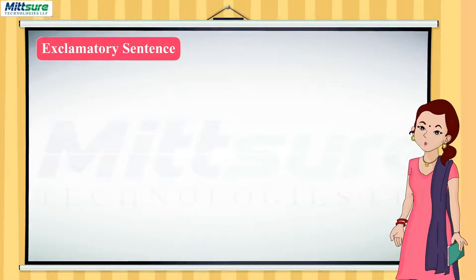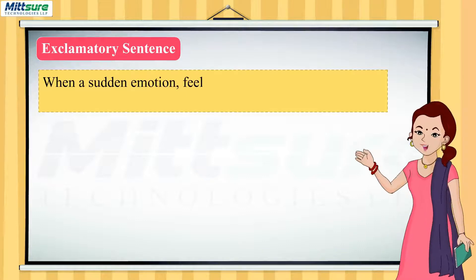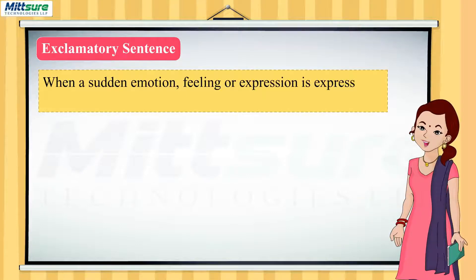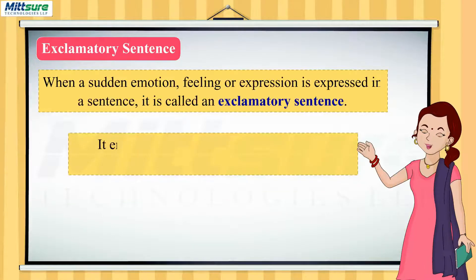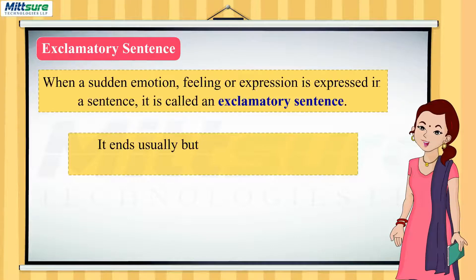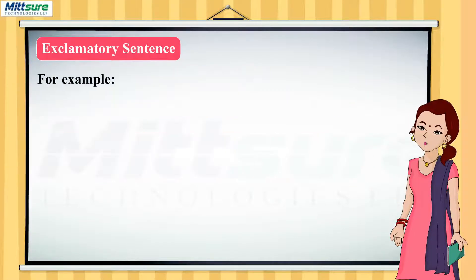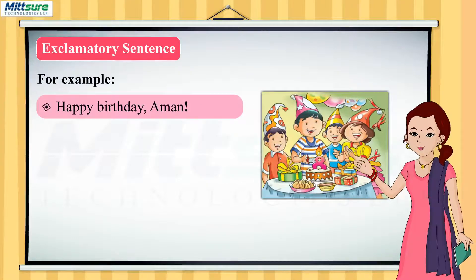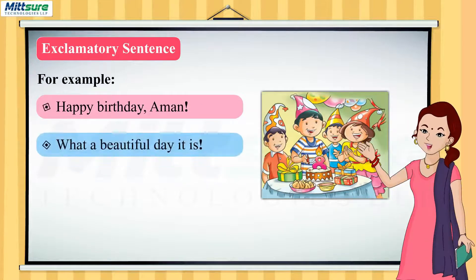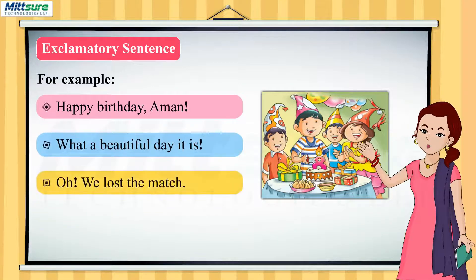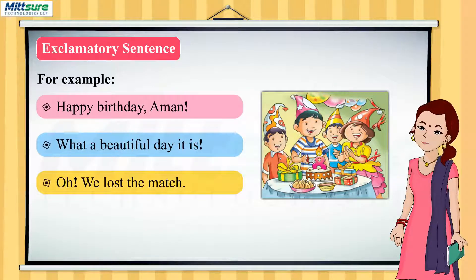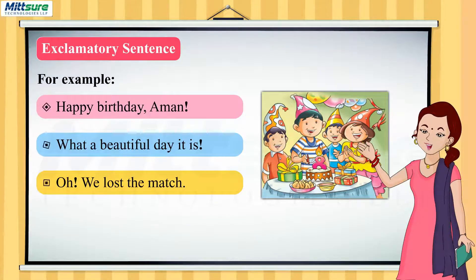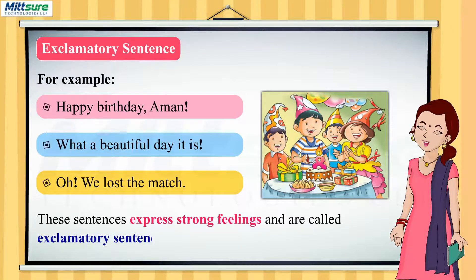Exclamatory sentence: when a sudden emotion, feeling, or expression is expressed in a sentence, it is called an exclamatory sentence. It ends usually, but not necessarily, with an exclamation mark. For example: happy birthday, Aman! What a beautiful day it is! Oh, we lost the match. These sentences express strong feelings and are called exclamatory sentences.